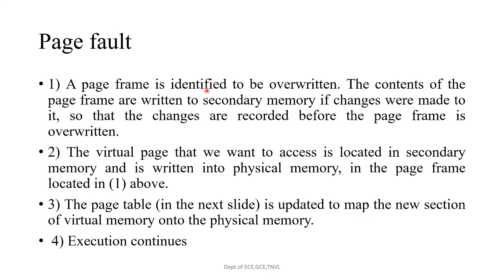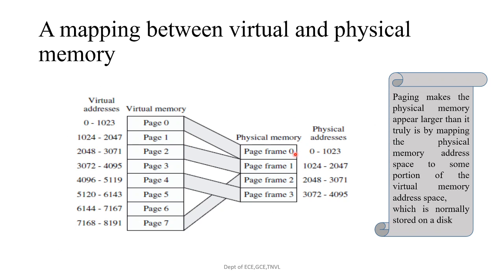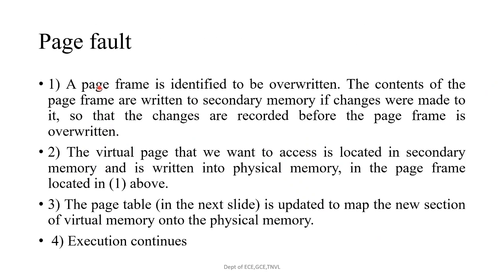What is a page fault? A page frame is identified to be overwritten. The page frames are the divisions of physical memory — each division is called a page frame. The contents of the page frame are written to secondary memory if changes were made, so that changes are recorded before the page frame is overwritten. A page fault occurs when you are searching for a page and the page is not present in memory. The virtual page that we want to access is located in secondary memory and is written into physical memory in the identified page frame. The page table is then updated to map the new section of virtual memory onto the physical memory, and execution continues.